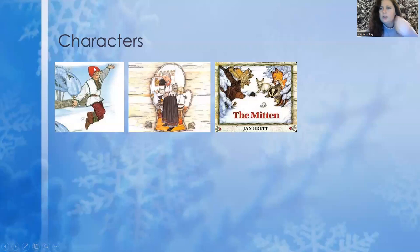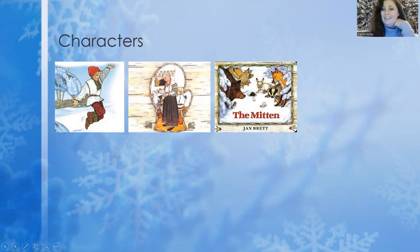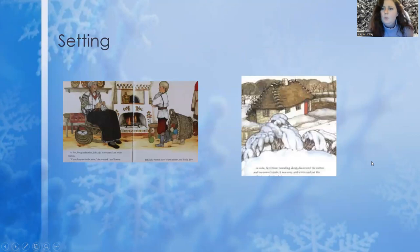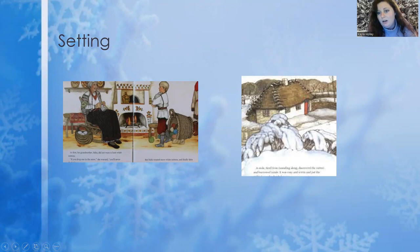So we need to talk about the characters. Do you remember who the characters were? There was a little boy named Nicky, a grandma named Baba, and then a bunch of animals. There was a tiny mole, a hedgehog, a badger, a fox, an owl, a snowshoe hare, a bear, and then the teeny tiniest field mouse. We also need to talk about where the story happened — that's called the setting. The story happened inside Baba and Nicky's house, and also outside in the snow around their house.